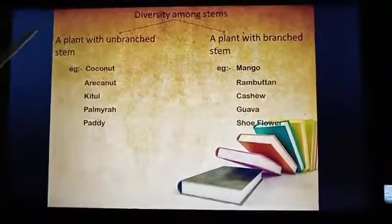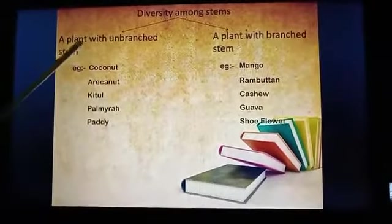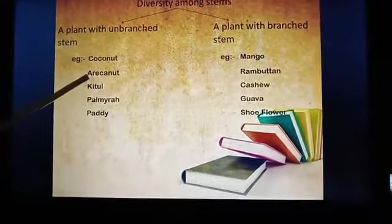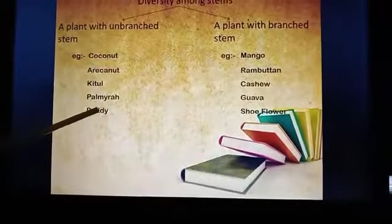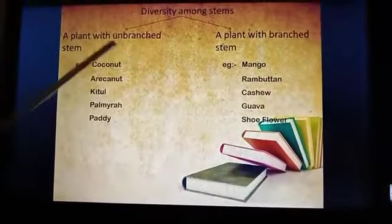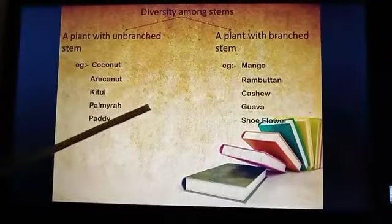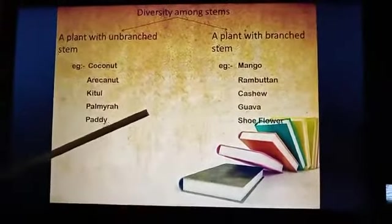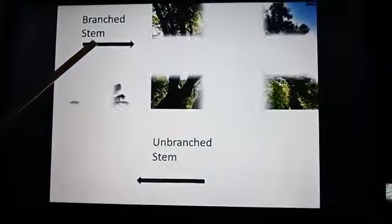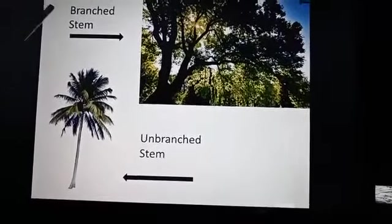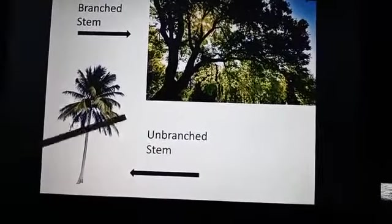Diversity among stems. Plants with an unbranched stem: coconut, areca nut, key tool, palmyra, paddy. Plants with a branched stem: mango, rambutan, cashew, guava, shoe flower. Branched stem and unbranched stem.